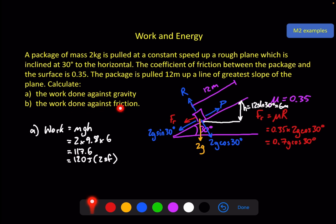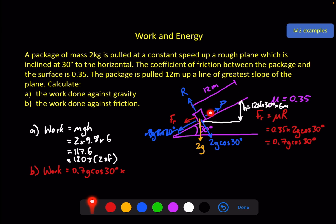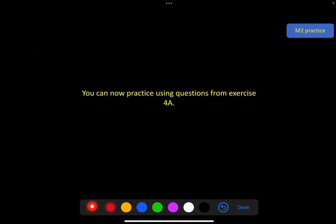For part B, work done against friction: we just need the friction force, which is 0.7g cosine 30°. The distance here is the 12 metres up the plane, because that's the direction parallel to the plane where friction acts. Work done against friction = 0.7g cosine 30° × 12 = 71.3 J, rounded to 71 joules to two significant figures. I hope that's enough for you to have a go at the questions in exercise 4A — see you in the next video.